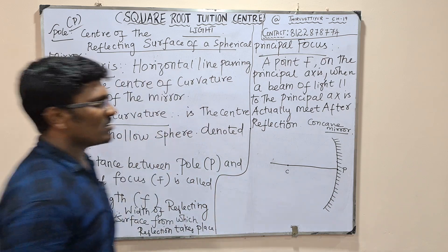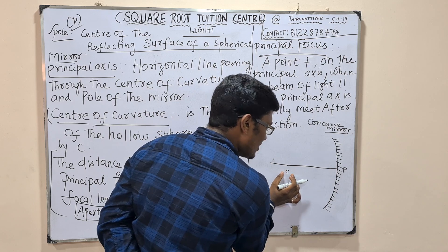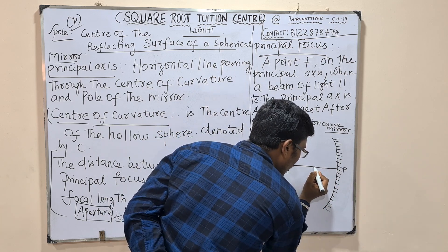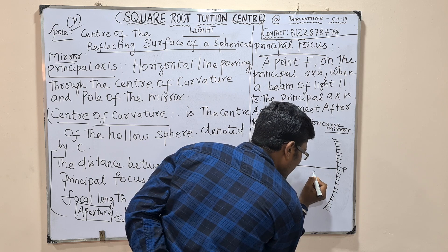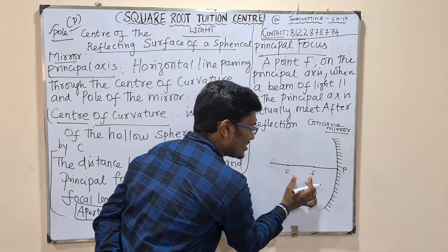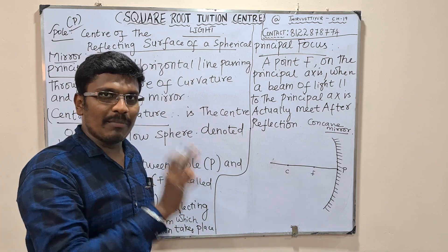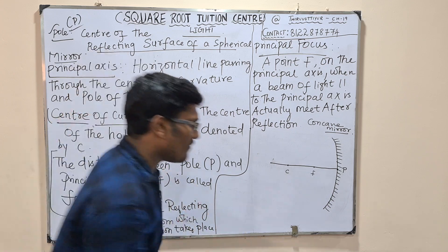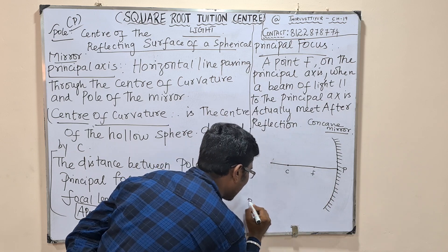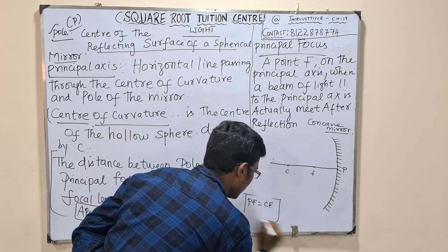Next is the principal focus. The principal focus is related to the center of curvature. P to F and C to F are the same length — P2F equals C2F, so the distances are equal.